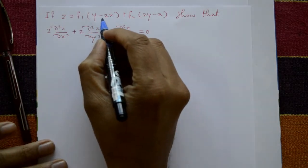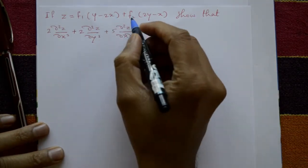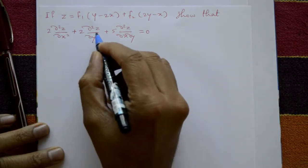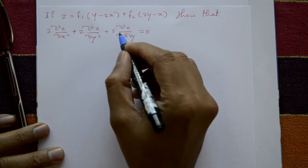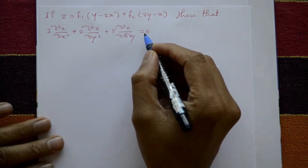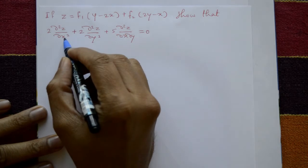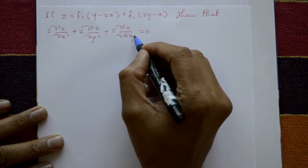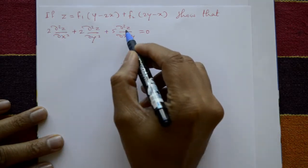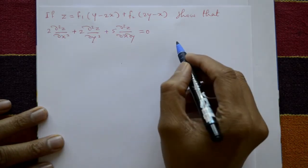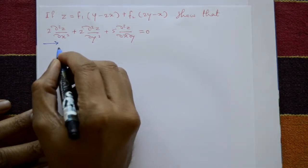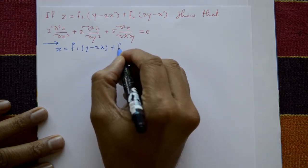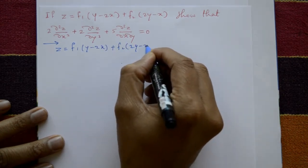If z is equal to f1(y minus 2x) plus f2(2y minus x), show that 2 times ∂²z/∂x² plus 2 times ∂²z/∂y² plus 5 times ∂²z/∂x∂y equals 0. Differentiate z with respect to x two times, with respect to y two times, and one time each x and y, then multiply by 2, 2, and 5 respectively. Add all three equations to get zero. The solution starts with z = f1(y minus 2x) plus f2(2y minus x), called equation number one.